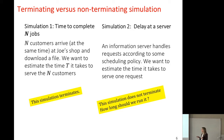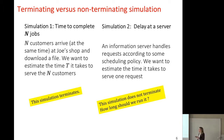The first simulation is a terminating simulation. This means there is a condition that, when satisfied, tells us we should stop the simulation. For example, in Joe's shop, N customers arrive and all want to download a file. When everyone has downloaded the file, all customers are served. At this moment we can terminate the simulation and return the estimated time to serve all customers — which will be the simulated time. For a terminating simulation, there is a sequence of processes in a well-defined environment, and there is a condition that stops the simulation when met.